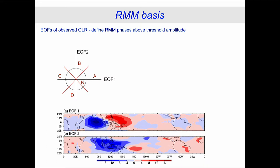Moving on from variance: does this translate into anything useful for prediction? We're going to look at different phases of the MJO using the RMM diagram — two EOFs of OLR, and projections onto those EOFs follow around phases A, B, C, D, with an N zone where the signal is weak.